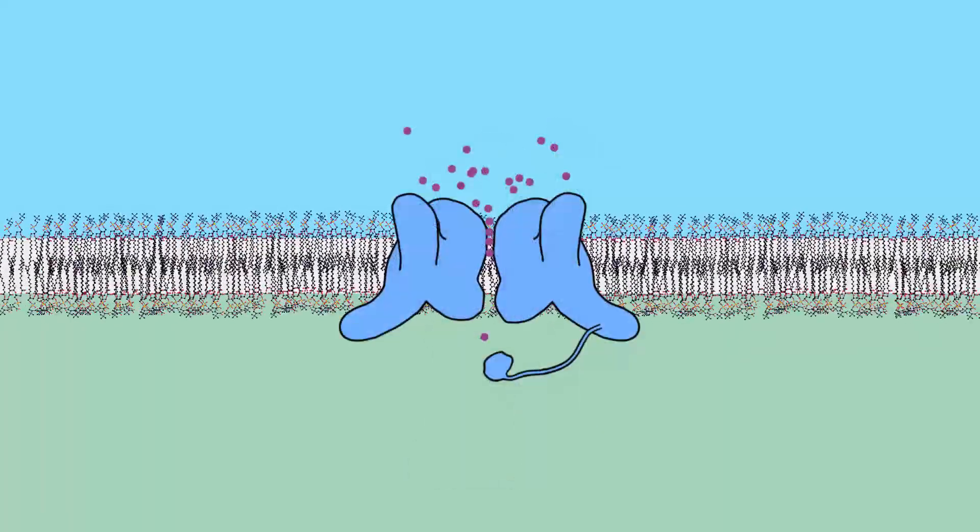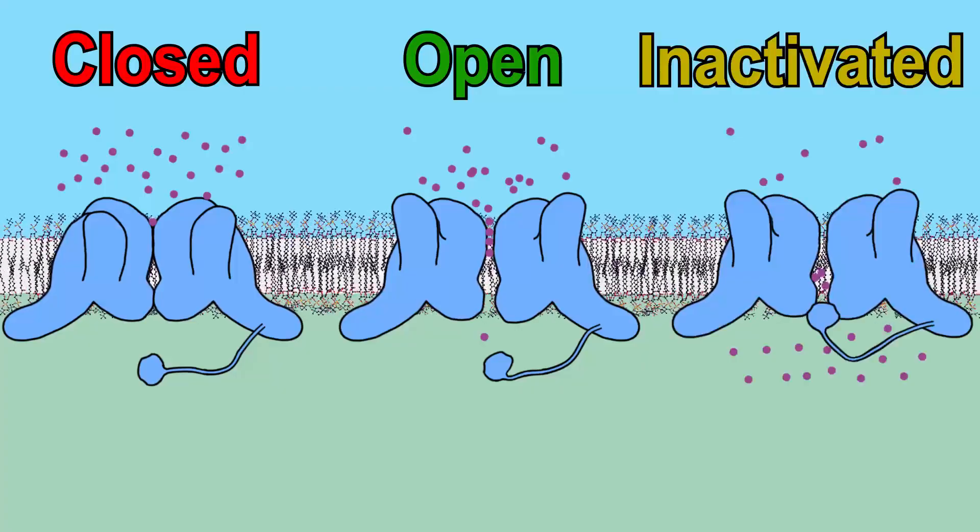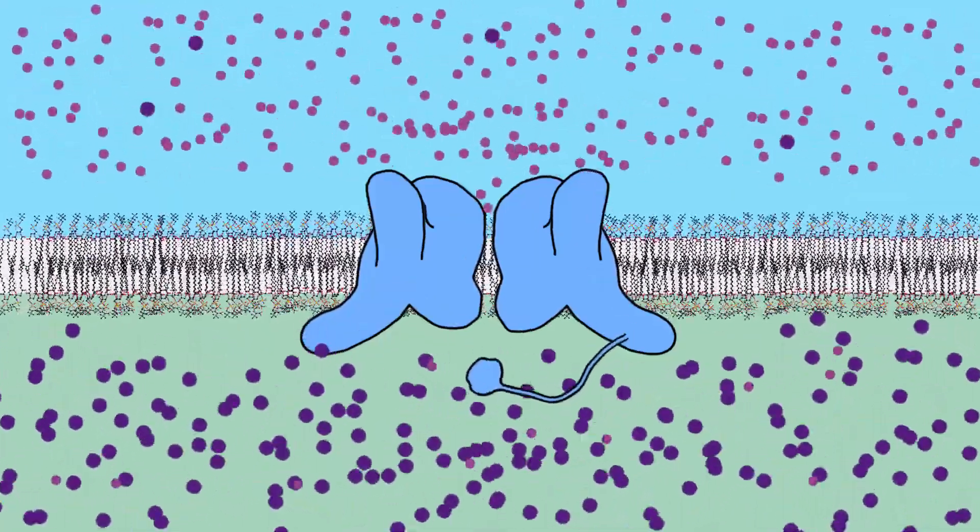The protein has three conformations: closed, open, and inactivated. The natural conformation of the protein is in open mode.